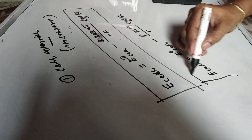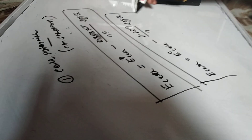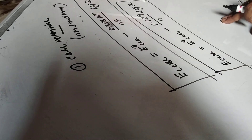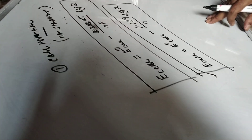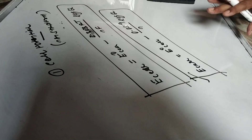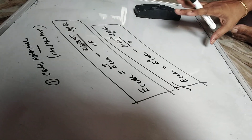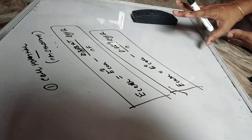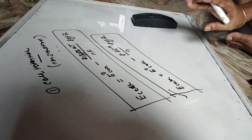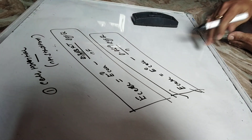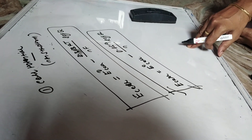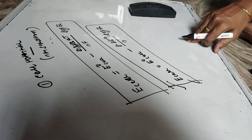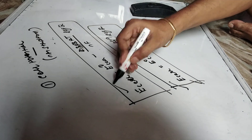When we solve numerical problems, if the temperature given is 25°C, then we apply the simplified equation with 0.059. And if any temperature other than 25°C is given, then we apply the full general equation.